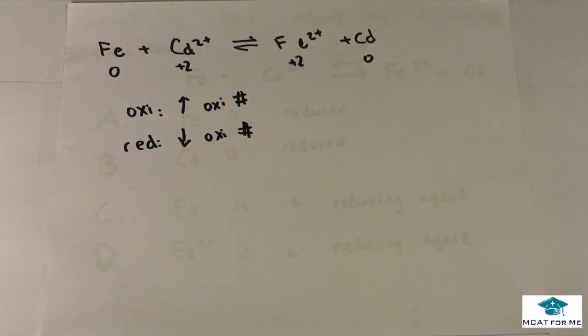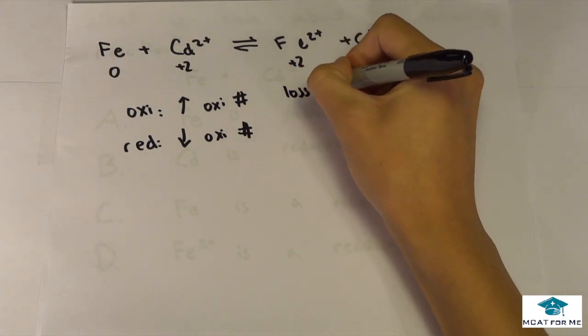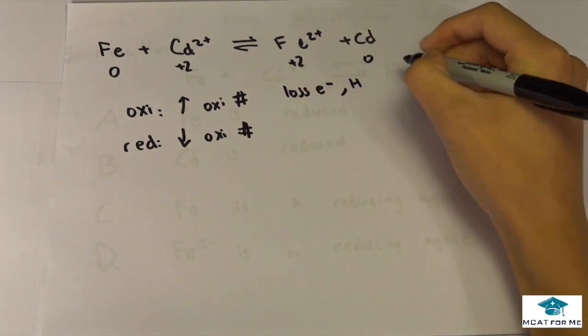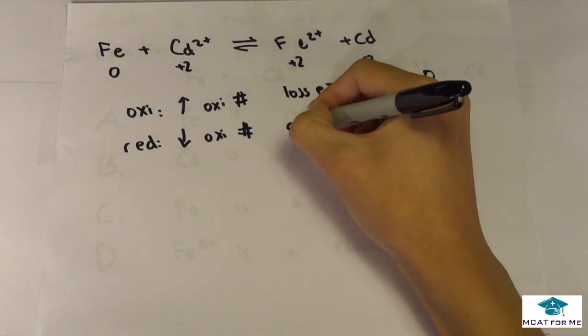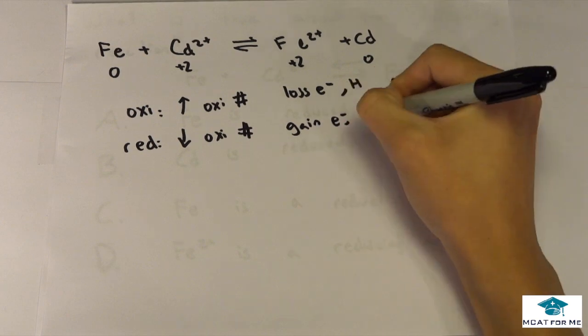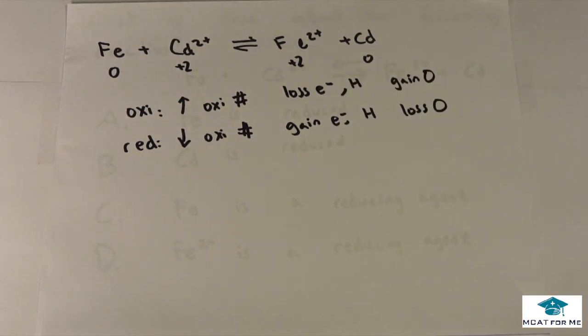But what exactly is oxidation? Well oxidation is a loss of electrons or hydrogens or the gain of oxygen and reduction is the exact opposite. So in this case if we lose electrons that means our charge will go up which is why the oxidation number goes up. So that should be intuitive, it should make sense.